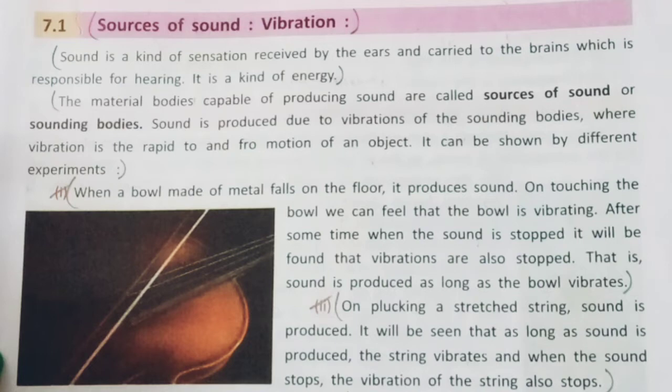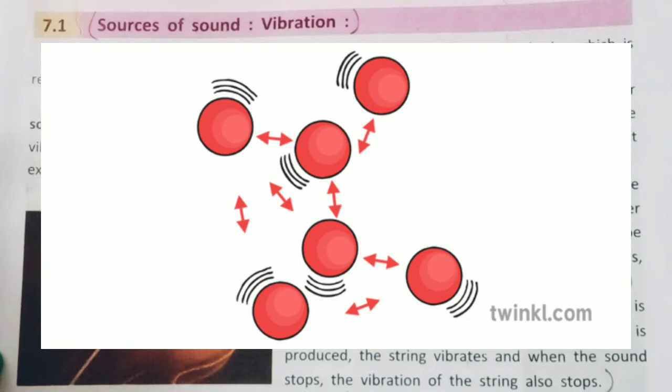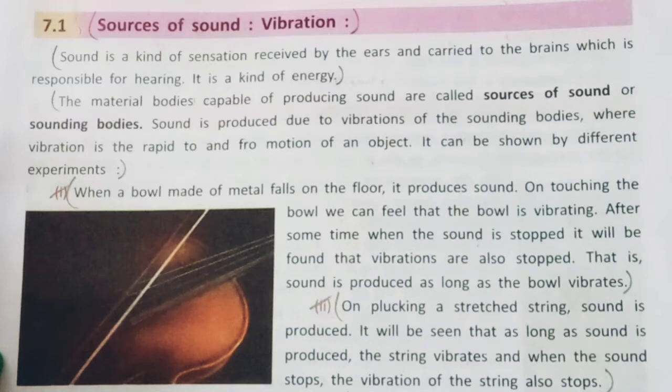Sound is produced due to vibrations of the sounding bodies. Vibration means movement — when particles move in the sounding bodies, only then is sound produced. Vibration is the rapid to-and-fro motion of an object. This can be shown by different experiments.